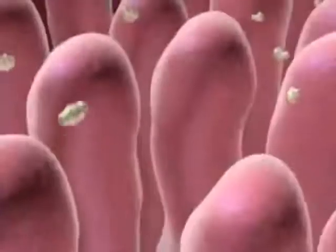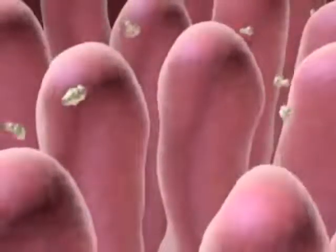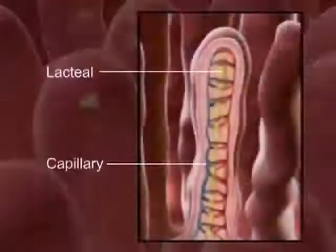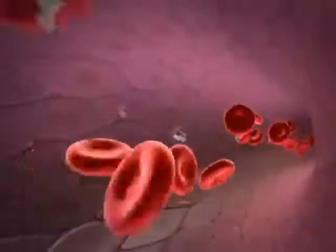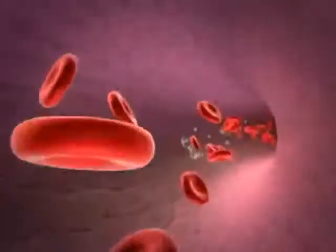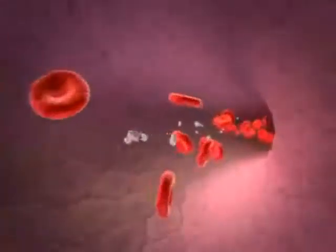The walls are covered with villi where nutrient absorption takes place. The structure of each villus contains a capillary and lacteal to pick up the digested nutrients. The nutrients are now transported by the blood to all the cells of the body.